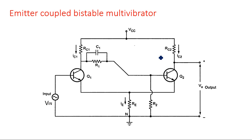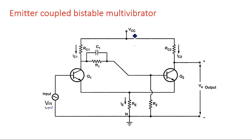The emitter coupled bistable multivibrator is constructed as shown in the circuit diagram. The key difference from previous bistable multivibrators is that this circuit has a specific input signal applied at the base of the first transistor Q1. In the previous cases — fixed bias and self-bias (both collector coupled types) — there was no specific input signal applied; only biasing supplies VCC and VBB were given.